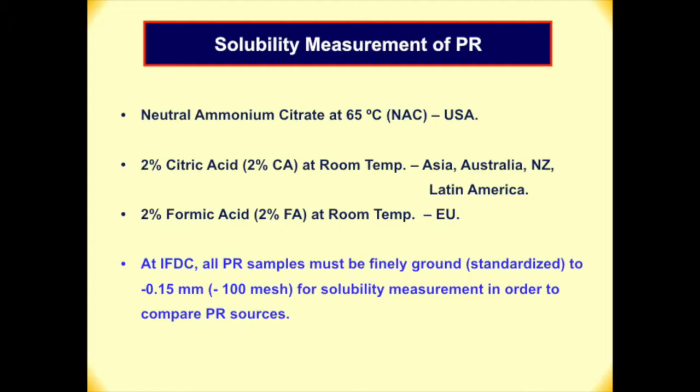Total P2O5 — all labs should come out the same because it's total digestion. But solubility is rather difficult. There are three methods: neutral ammonium citrate in the United States (AOAC method), 2% citric acid at room temperature (1g per 100ml), normally in Asia, Australia, New Zealand, and Latin America, and 2% formic acid normally used in the EU. At IFDC, all phosphate rock samples must be finely ground and standardized to 0.15mm or minus 100 mesh for solubility measurement, in order to compare different sources, because particle size can affect your solubility measurement.